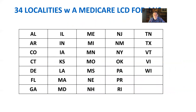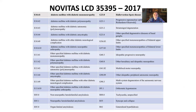34 different localities today — and this is July of 2017 — have a Medicare LCD for Autonomic Nervous System testing. Novitas, for instance, has LCD 35395, and it was updated in April of this year. Here are the list of covered diagnosis codes on it.